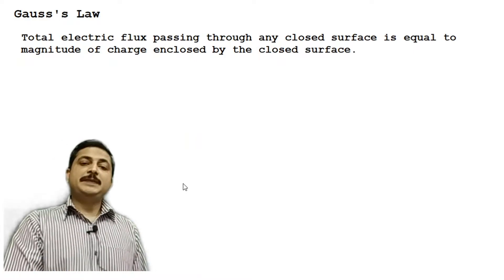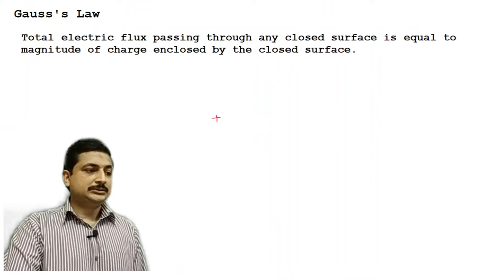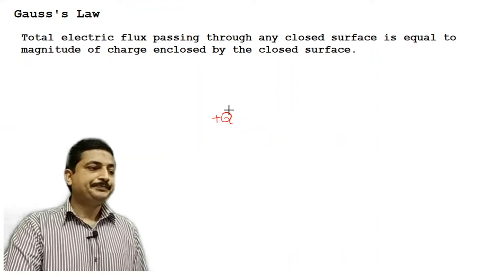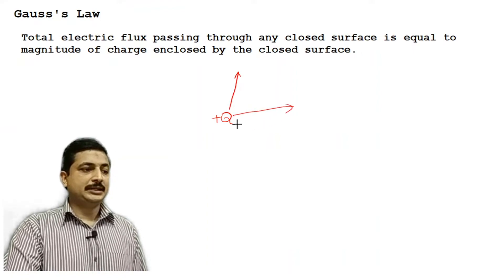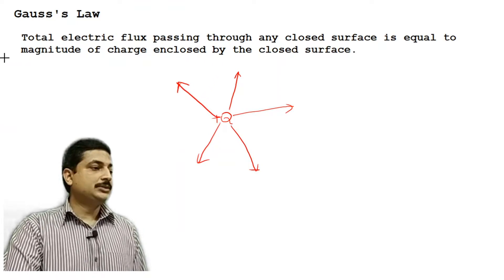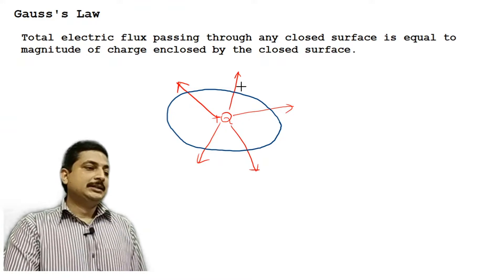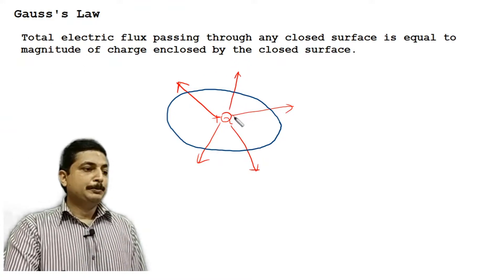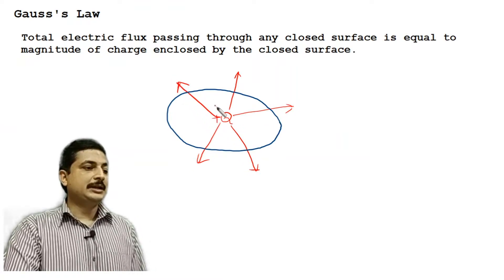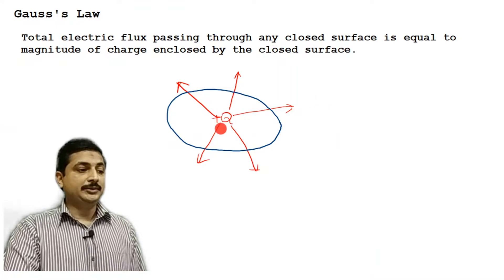While explaining flux and flux density, you have already seen that if you have a charge of magnitude plus Q, the flux lines will be radially outwards. To understand Gauss's law, I should enclose this plus Q by some closed surface. The flux lines coming out are indicated by these red lines, and this total flux coming out, if you calculate, will be exactly equal to the magnitude of the charge inside this cube.